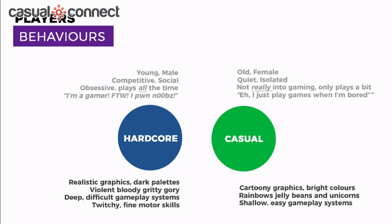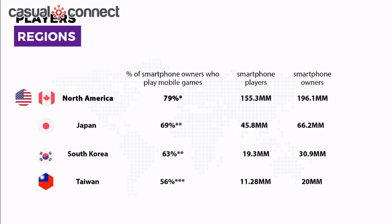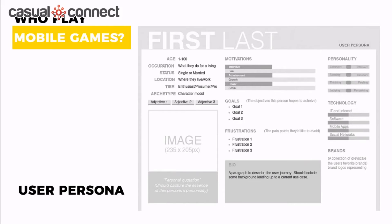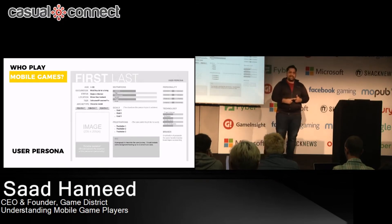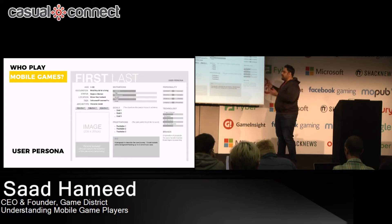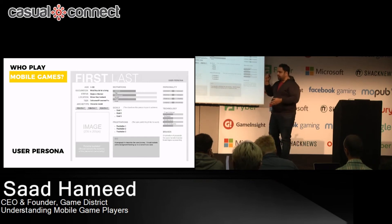Looking at players by region: North America has 79% of the population owning smartphones, then Japan, South Korea, and Taiwan follow in terms of smartphone ownership. The solution we always apply before starting any game is the user persona. We find one specific user for whom we're developing the game. There's a user persona chart you can find on Google — you fill it out yourself: the person's name, age, and so on. It's a design thinking process that has really helped us achieve downloads, right user acquisition, and ultimately revenue.